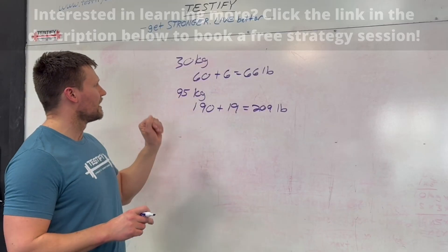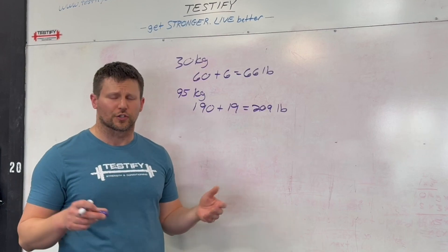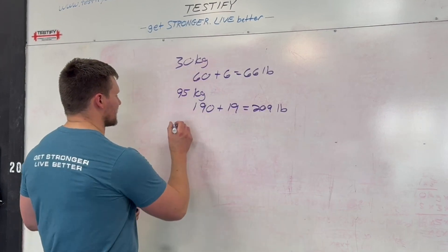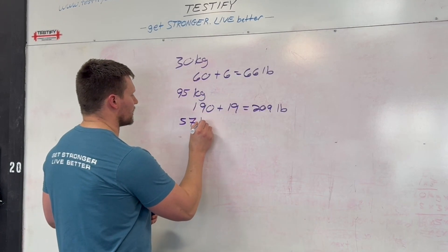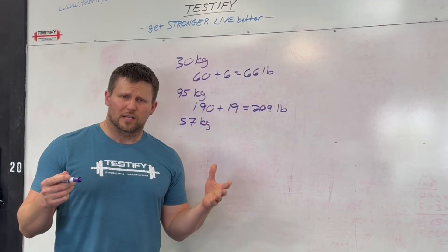Now, we've done a number with a zero. We've done a number with a five. Those are both a little bit on the easier side, so let's test this out with a harder one. Let's try 57 kilograms. Kind of an ugly number there.